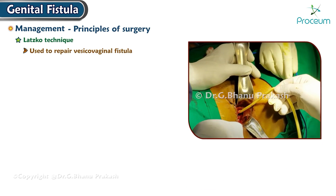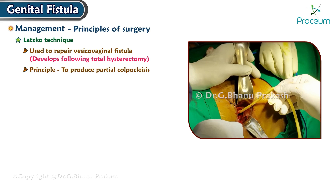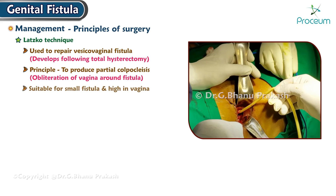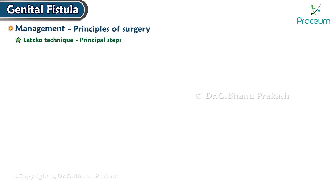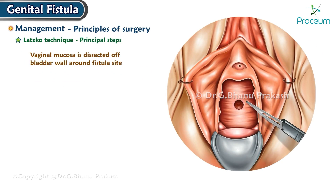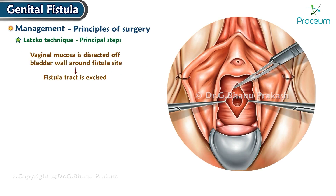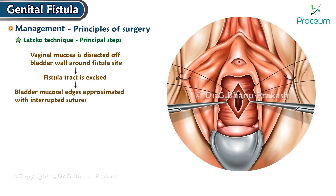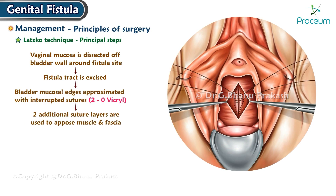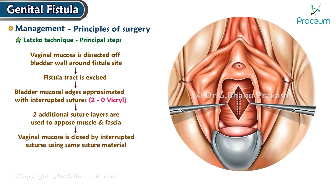Latzko technique is used to repair a vesicovaginal fistula that develops following a total hysterectomy. The principle is to produce partial colpocleisis — obliteration of the vagina around the fistula — and is suitable for a small, high fistula. Principle steps: vaginal mucosa is dissected off the bladder wall around the fistula site; the fistula tract is excised; bladder mucosal edges are approximated with interrupted sutures (2-0 Vicryl); two additional suture layers oppose the muscle and fascia; vaginal mucosa is closed with interrupted sutures using the same material.